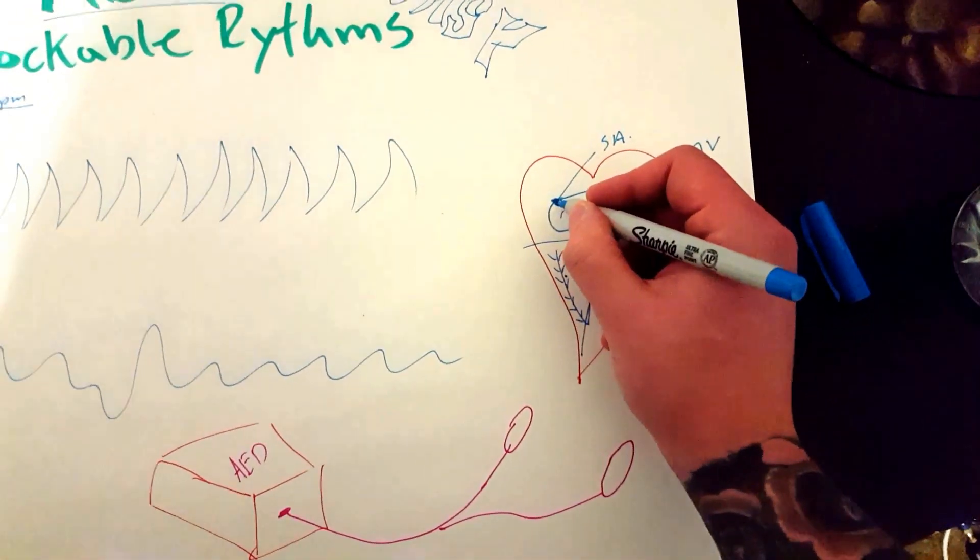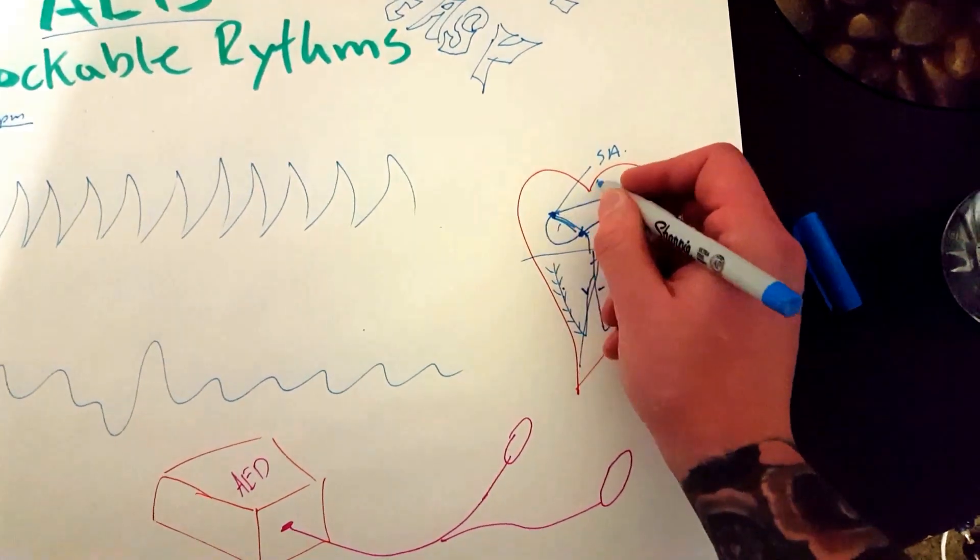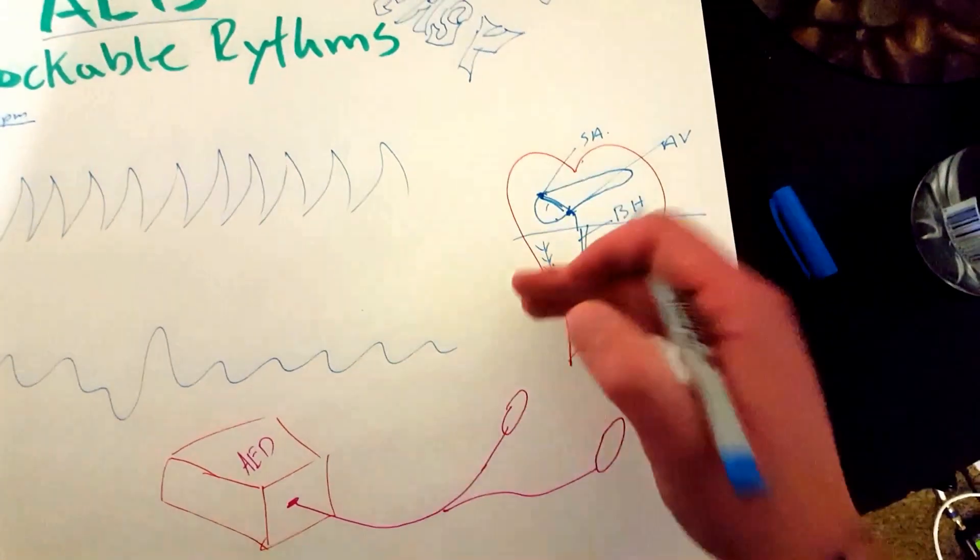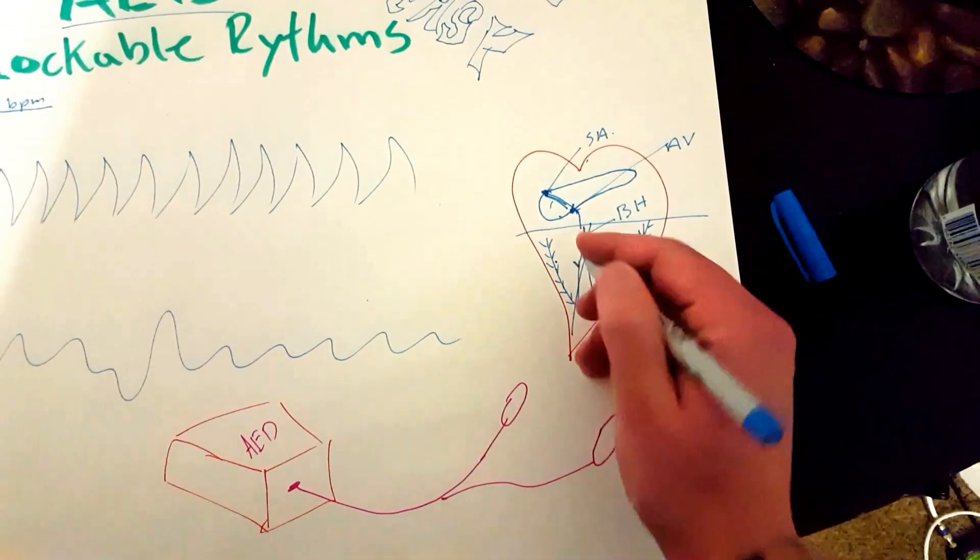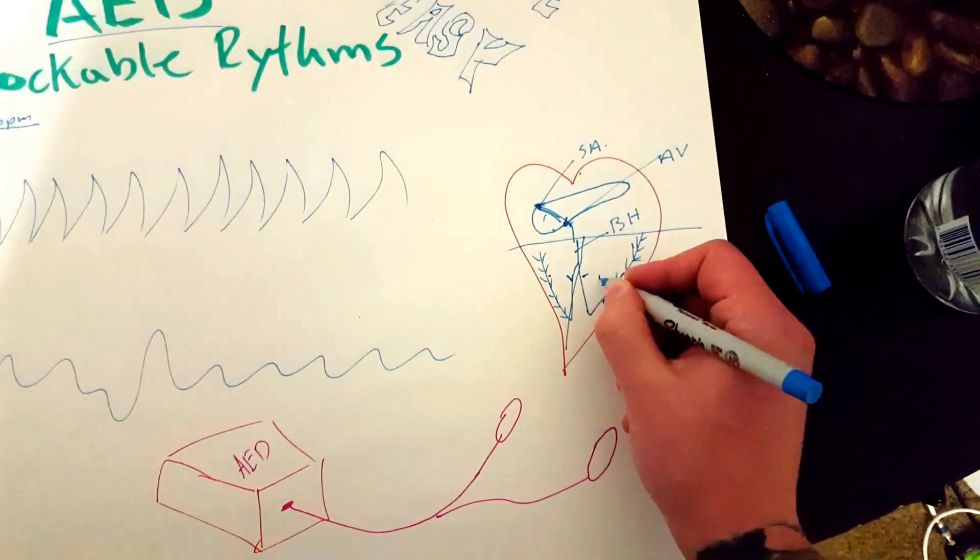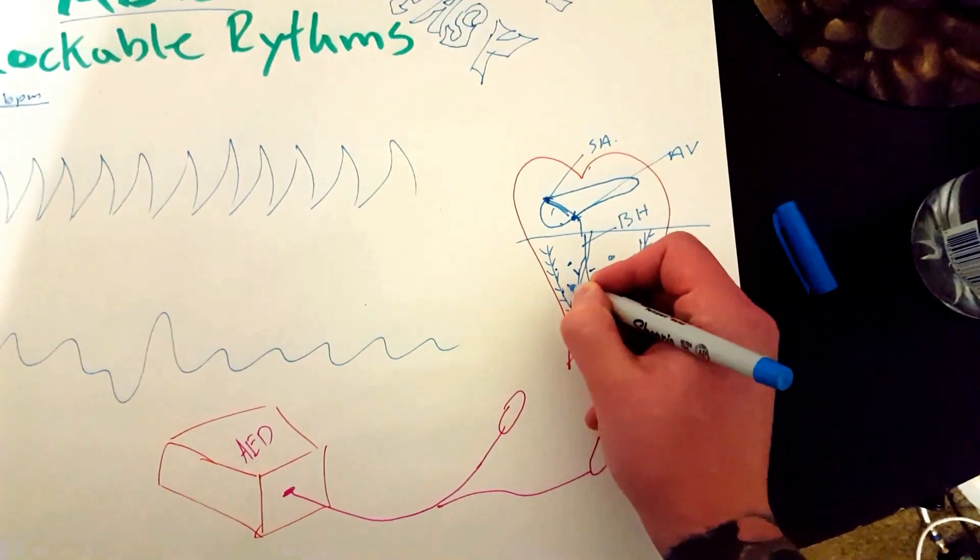This sequence might still be there. So electricity may still be generated in the SA node, travel to your AV node, bundle of His, so on and so forth.